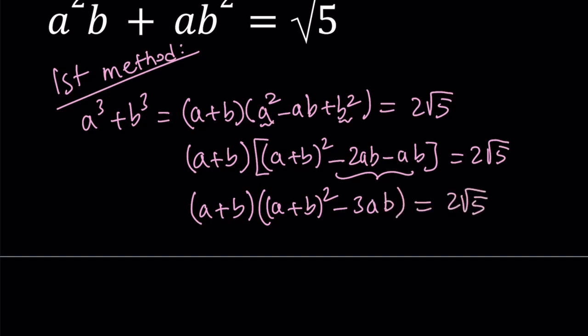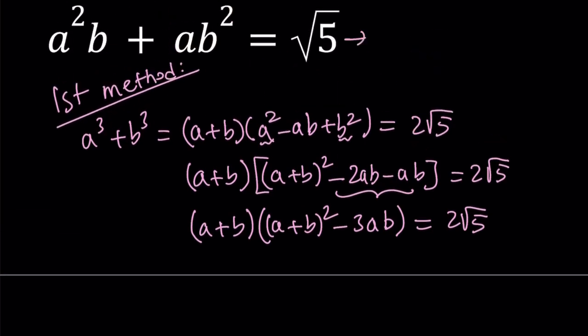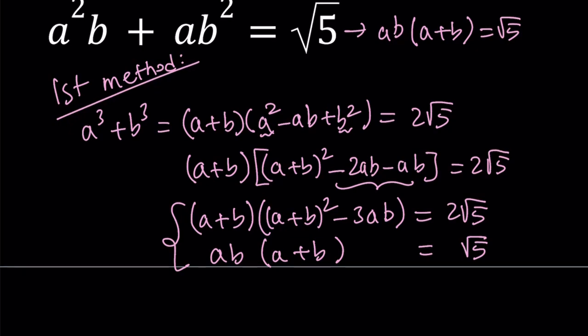Now we have this equation and then we have the other equation. The second equation can be factored as well. We can take out an ab and we're going to get ab(a+b) = √5. This is our system and we're going to solve that system.